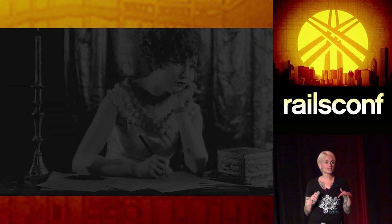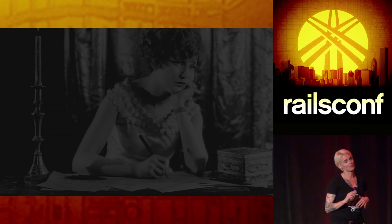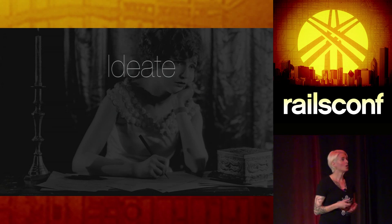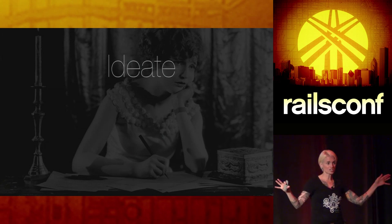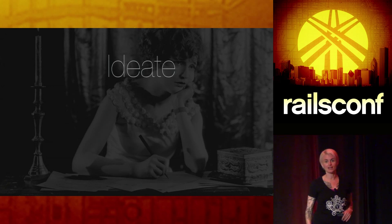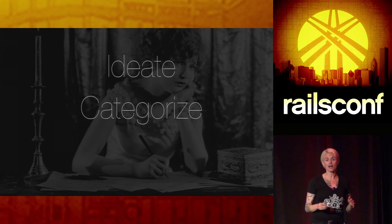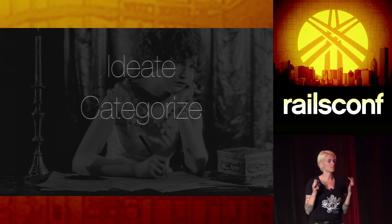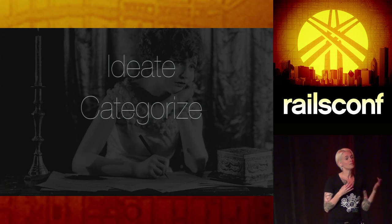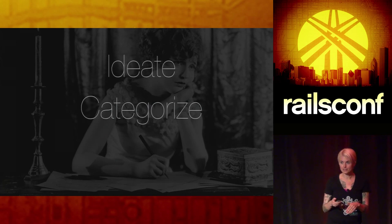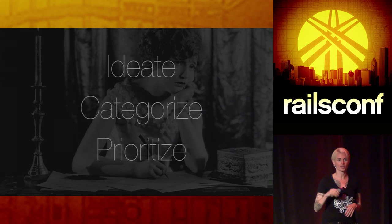Now for the process. The exercises I'm going to take you through really consist of the same three basic steps. We're going to have a ton of sticky notes and write a lot of words on them — that's the ideation process. After that, we're going to take those words and start to group them, categorize them by common themes. Once we have that done, then we're going to prioritize. We're going to have some winners.